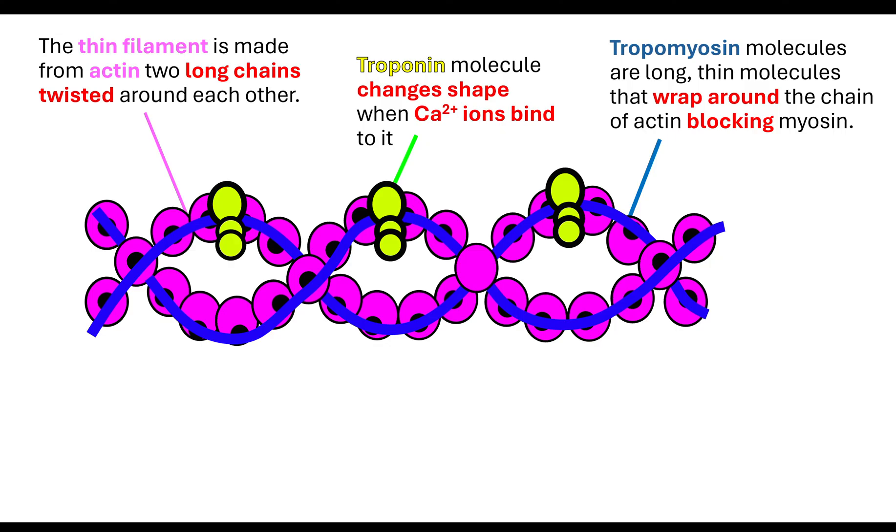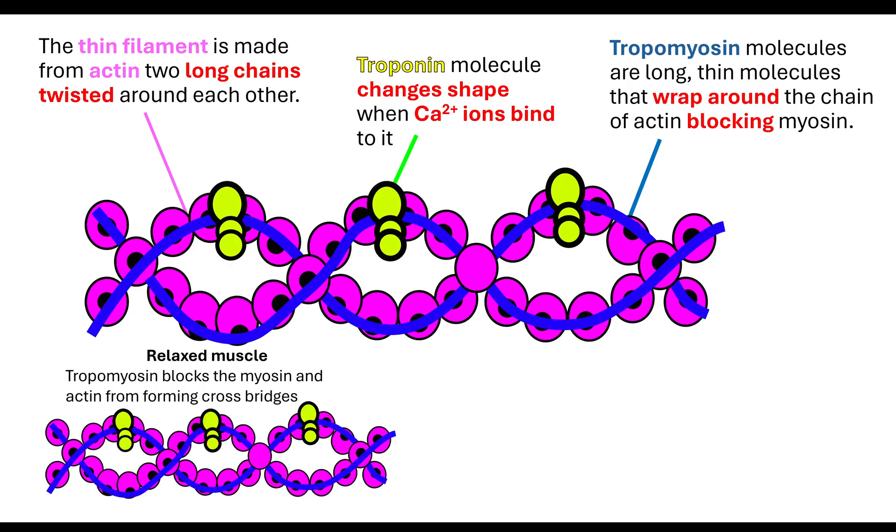The tropomyosin molecule is a really long thin molecule that wraps itself around the chain of actin, blocking the myosin. When the muscle is relaxed, the tropomyosin actually blocks the myosin from attaching to the actin.